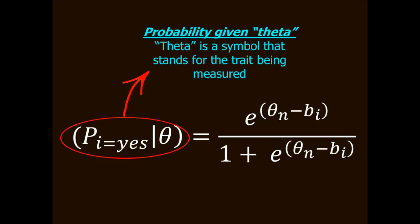And here's what the equation looks like. I'm going to break it down into each of its component parts. The first part is P subscript i equals yes. That's just referring to the probability of responding yes to item i. Then next there's the straight line, which just means given, followed by the Greek letter theta. So the left part of the equation says we will define the probability of responding yes to an item for a particular level of theta as all the stuff that's on the right side of the equation.